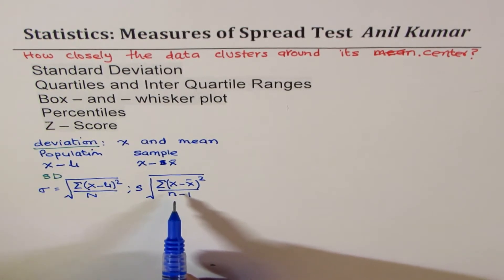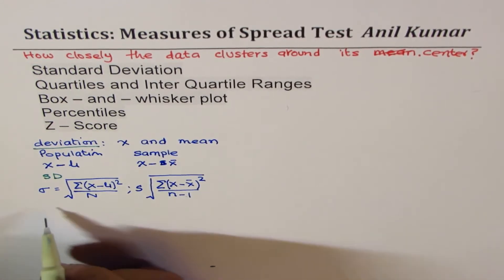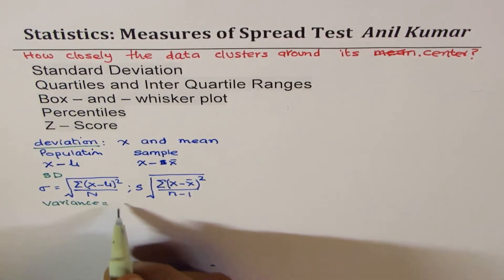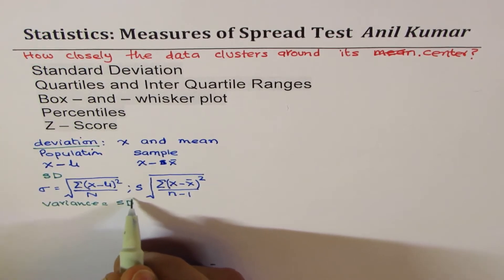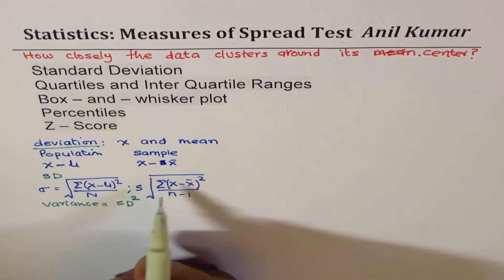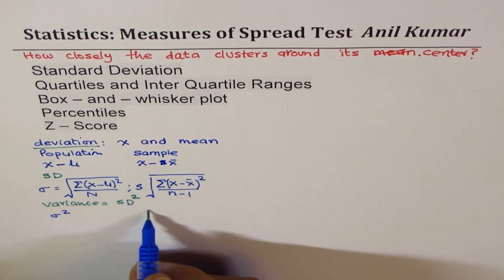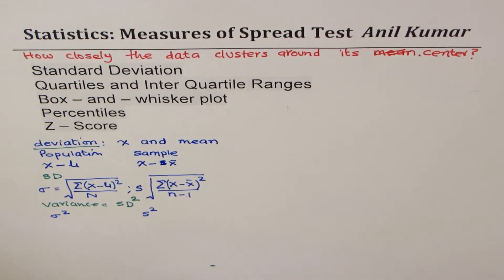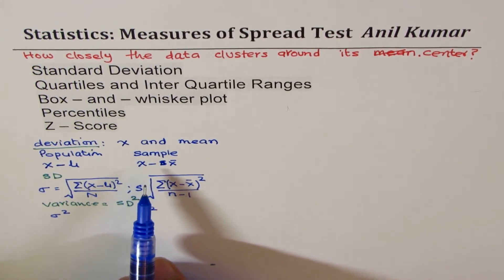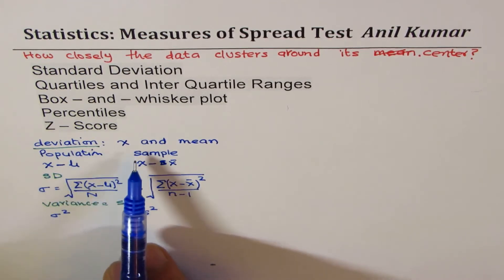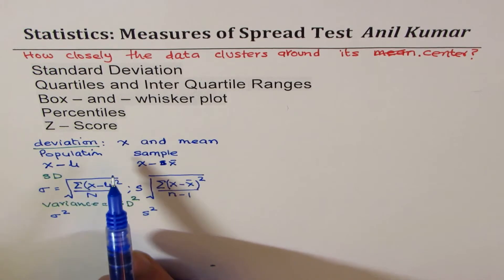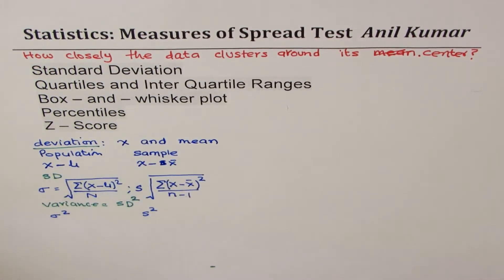We also use the word variance, which equals the square of standard deviation — so no square root is taken for variance. For population, variance is sigma squared; for sample, it is S squared. Standard deviation tells you how closely the data is clustered around the mean. A large standard deviation means data is dispersed widely; a smaller standard deviation means it is compact.